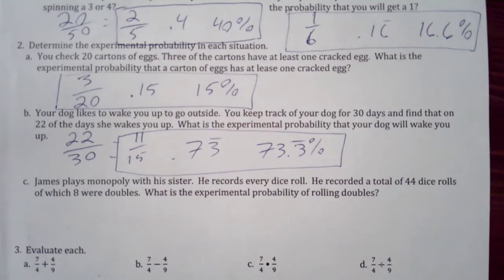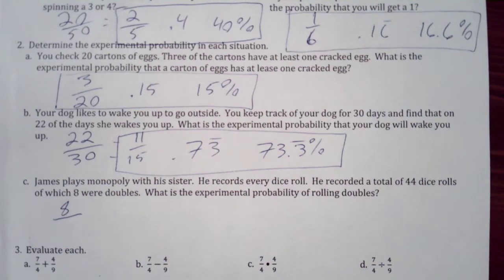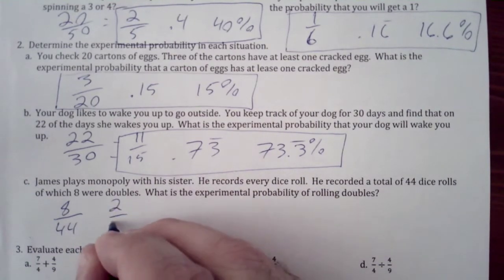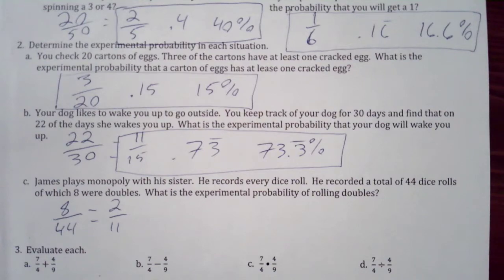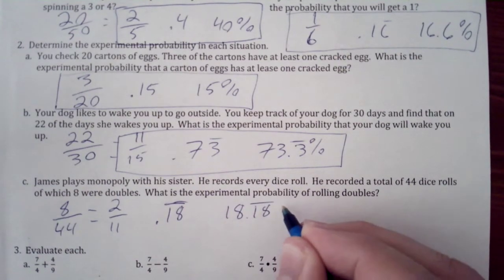Let's look at the third one. James plays Monopoly with his sister. He records every die roll. He recorded a total of 44 dice rolls, of which eight are doubles. What is the experimental probability of rolling doubles? So we take our favorable outcomes. He had eight times they rolled doubles out of 44 rolls. This reduces down to 2 over 11, which is 0.18 repeating or 18.18 repeating percent.